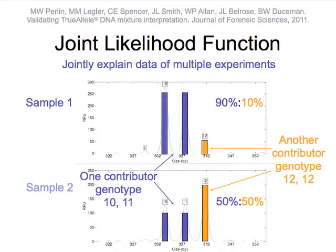The key scientific idea here is the joint likelihood function, described in our November JFS paper and in other papers. The idea is: how do you explain evidence based on some hypothesis? Let's look at one hypothesis — we have a pair of alleles from one contributor where the genotype is 10-11, shown in blue. In orange, we have another contributor whose genotype is 12-12. If there's a 90% blue to 10% orange in the first sample, and a 50-50 of blue to orange in the second sample, that accounts for the data. That would be a good explanation with a high likelihood.